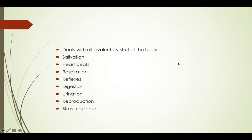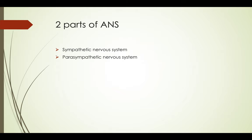A brief overview of the autonomic nervous system: it deals with the involuntary functions of the body, including the beating of the heart, respiration, common reflexes, digestion, urination, reproduction, stress response, and even salivation. So everything is controlled involuntarily by the body — we have no control over it.